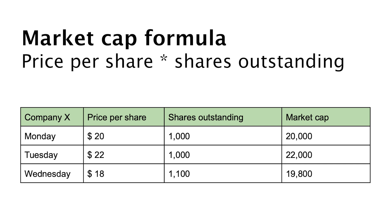In reality, the market cap will go up and down on a daily basis. For example, on Monday, company X has a share price of $20 and 1,000 shares outstanding, giving a total market cap of $20,000. On Tuesday, the share price increases to $22 but shares outstanding stays at 1,000, so the total market cap is $22,000, an increase of $2,000. On Wednesday, the company issues new shares bringing the total to 1,100 shares outstanding, but the stock price declines to $18, giving a market cap of $19,800.